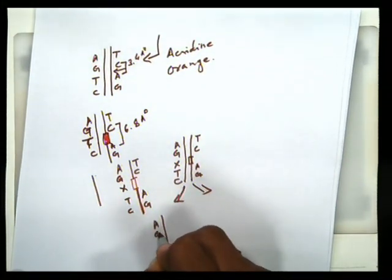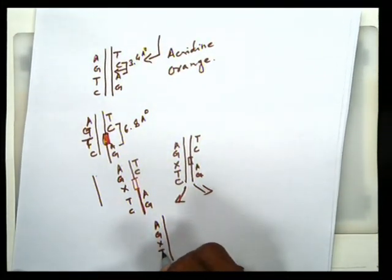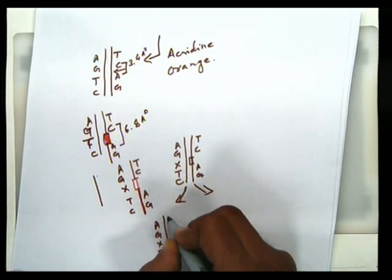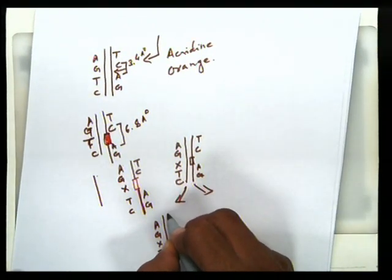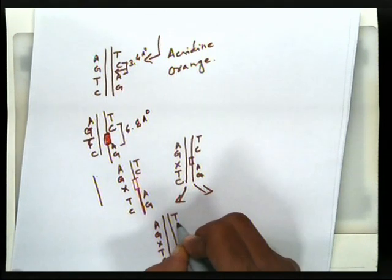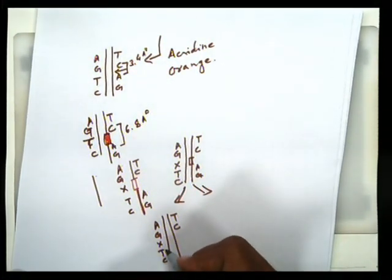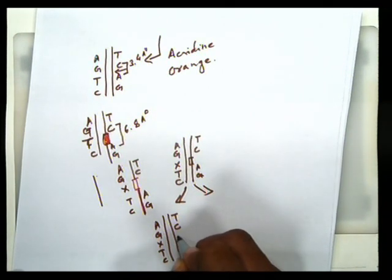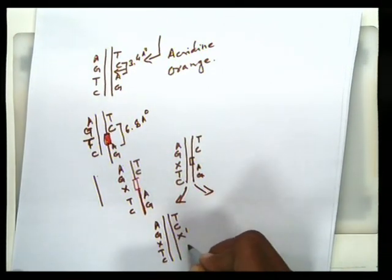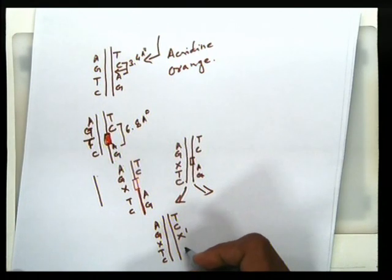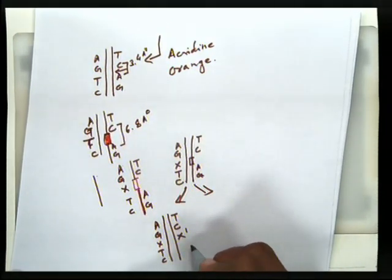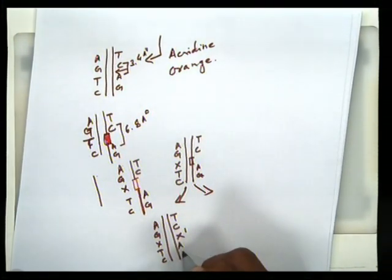A and G and X and T and C. This is the template. What will happen? Against A there will be T, against G there will be C, against X that is it could be A or T or G or C whatever. The complementary nucleotide let us identify it as X prime and then against T there will be A and against C there will be G.